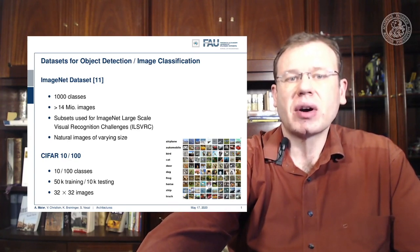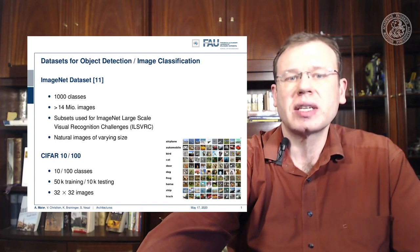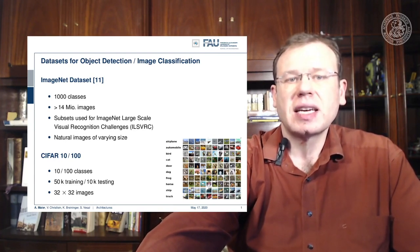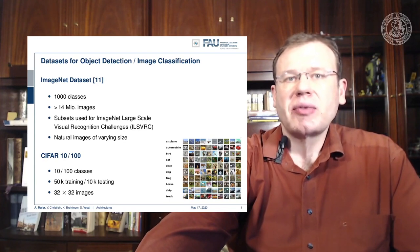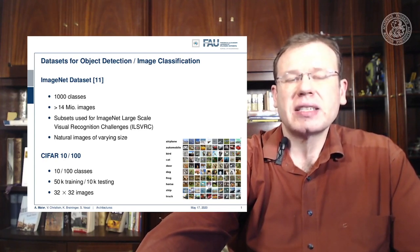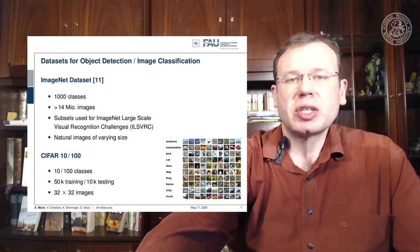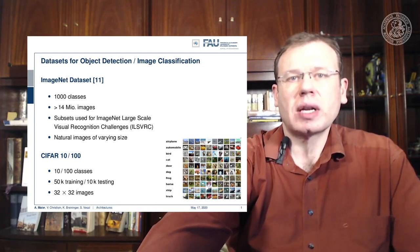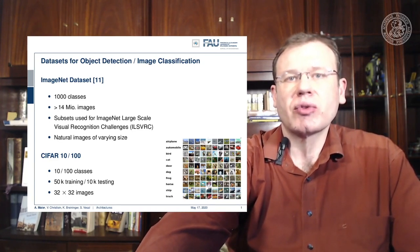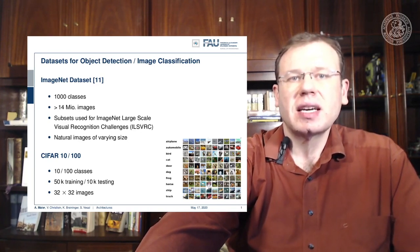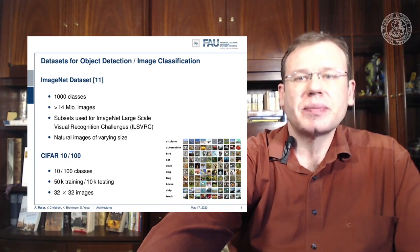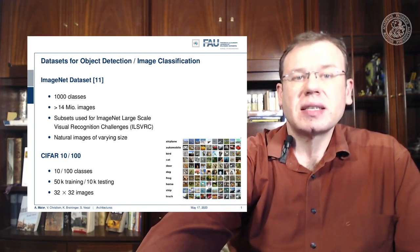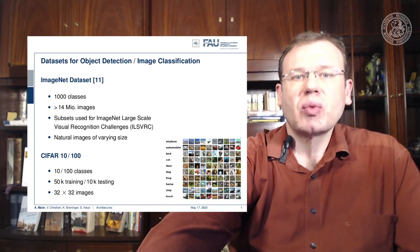It has something like a thousand classes, more than 14 million images, and subsets have been used for the ImageNet Large-Scale Visual Recognition Challenges. It contains natural images of varying size. There's also a smaller dataset if you don't want to train with millions of images right away. There's the CIFAR datasets, CIFAR-10 and CIFAR-100, which is 10 and 100 classes. There we only have 50k training and 10k testing images with reduced size 32x32, in order to very quickly explore different architectures.